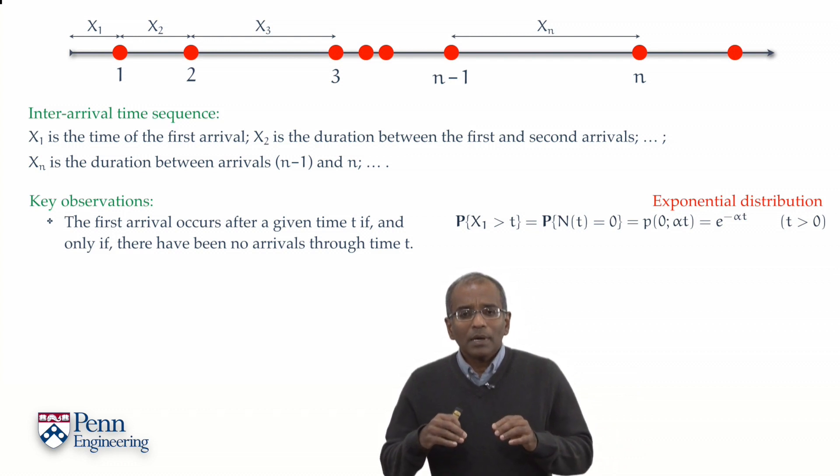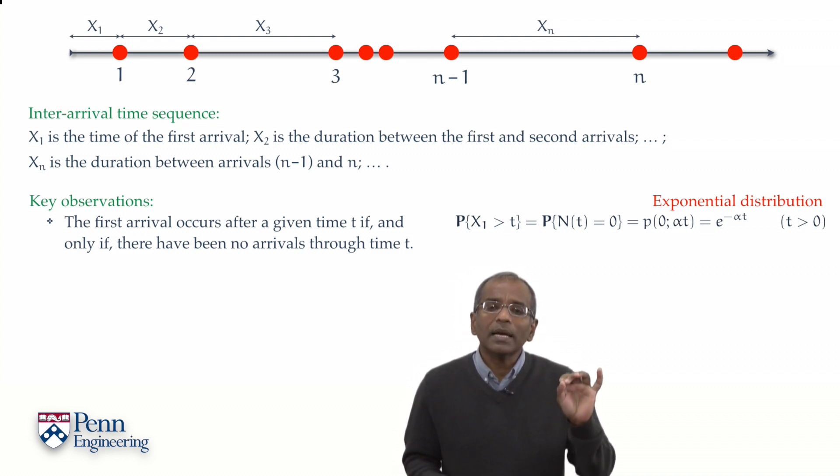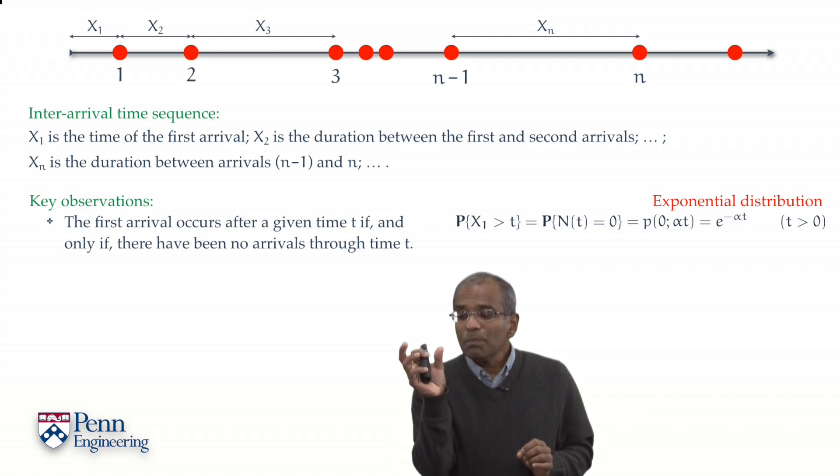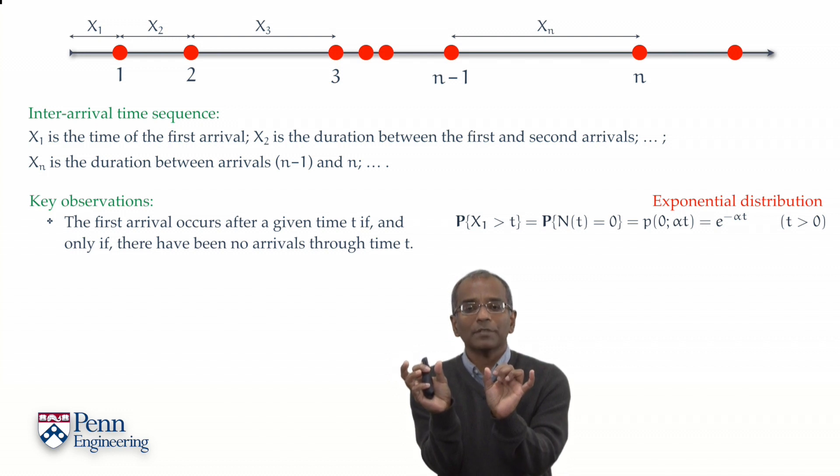Now, the key element here, the key observation here, is that the Poisson process has independent increments. And what does that mean? It means that the number of arrivals in a given interval is independent of the number of arrivals in any interval disjoint from the first.